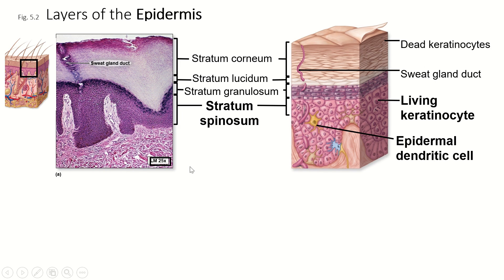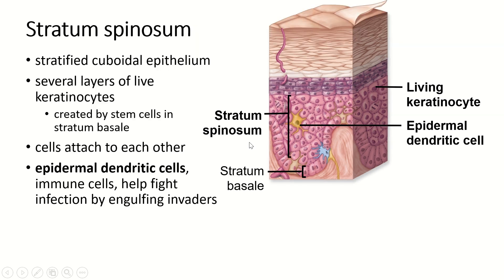The first layer above the stratum basale is the stratum spinosum. If it sounds like these are spiny cells, that is exactly what it means. These cells have these little spines on them, which are actually the intercellular junctions.